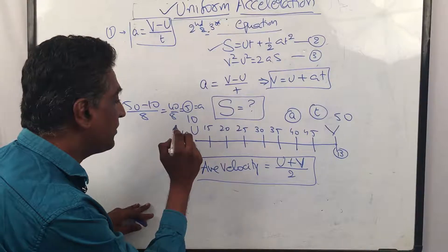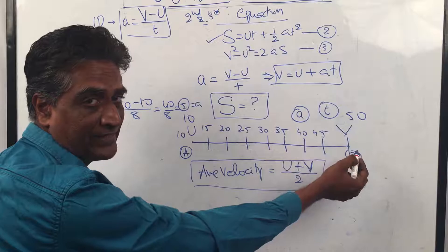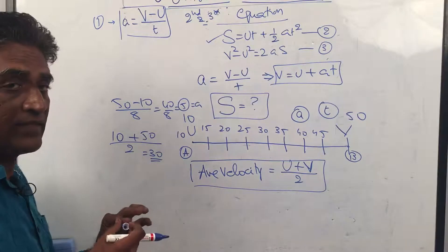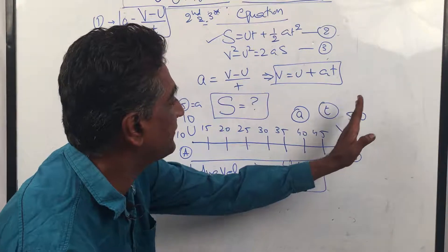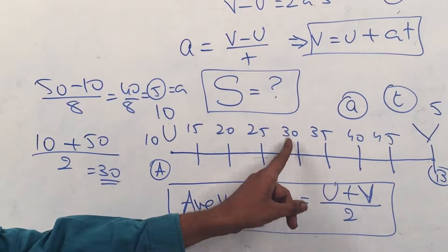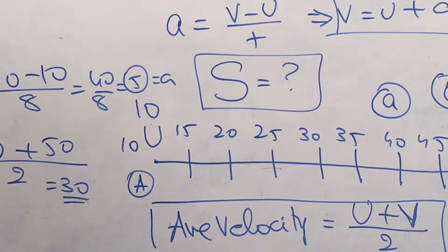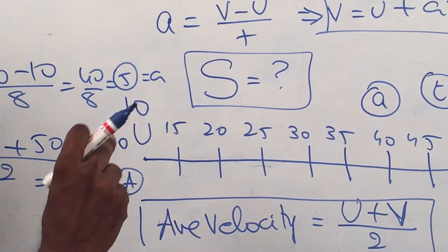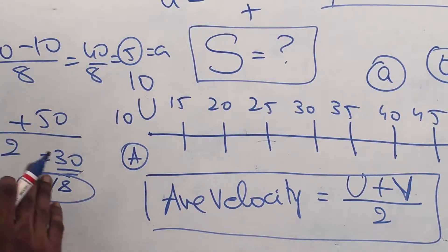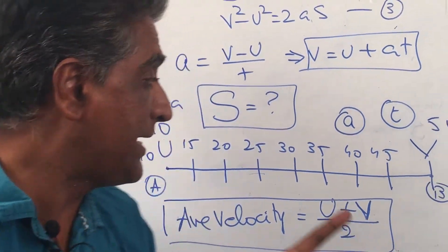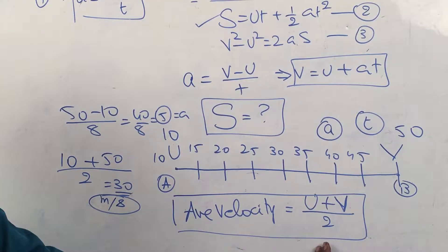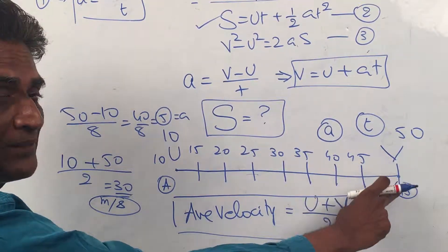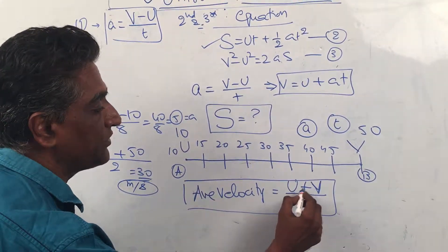Whether the object goes from 10 to 50 increasing step by step, or travels at the constant average of (10 + 50) / 2 = 30 m/s — both will cover the same displacement in the same time. A person starting at 10 m/s and increasing uniformly, and another starting at exactly 30 m/s constant, will reach the same point at the same time. So average velocity = (u + v) / 2 is true for uniform acceleration.